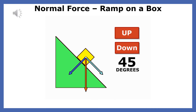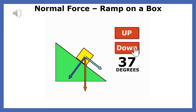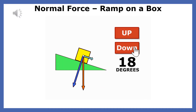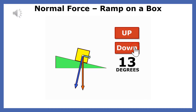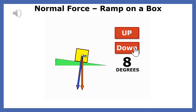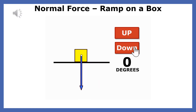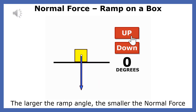The ramp's force on the box is called the normal force. When the ramp is flat, the normal force is equal to the weight force. When the ramp is 90 degrees, the normal force is equal to zero — the box does not press on the ramp. The larger the ramp angle, the smaller the normal force.